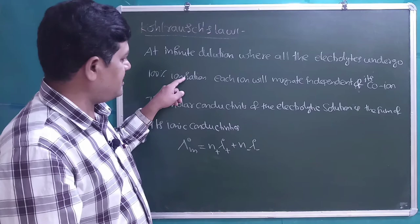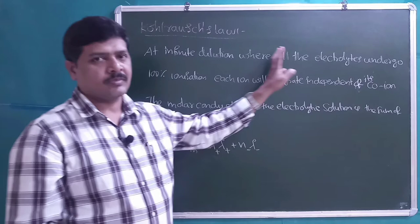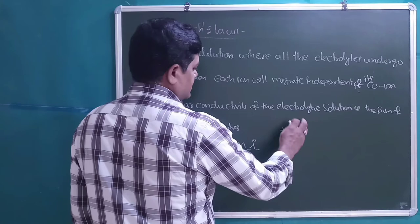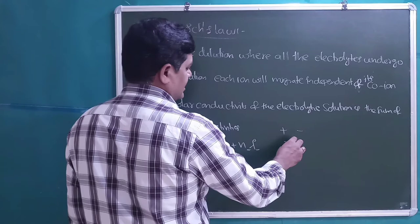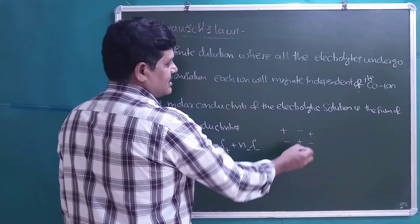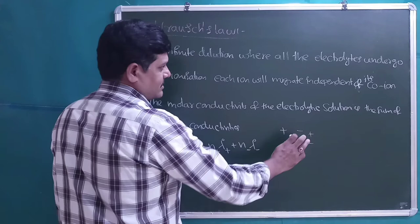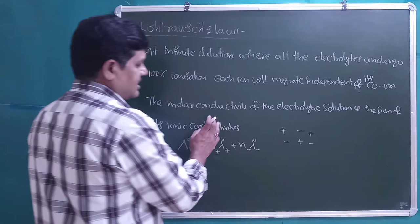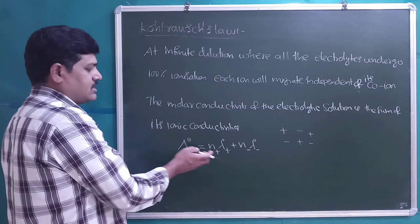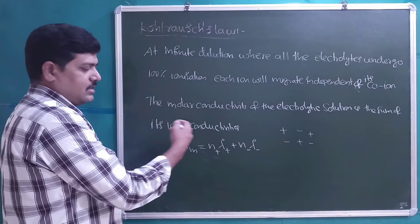At infinite dilution, whether it is a strong or weak electrolyte, all electrolytes undergo complete ionization. Each ion will migrate independent of its co-ion. If you take a cation, it is independent of the anions because there is a maximum distance — adequate amount of water is present. At that condition, molar conductivity of the electrolytic solution is equal to the sum of the ionic conductivities.